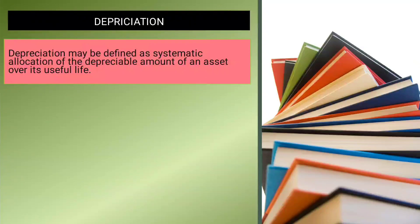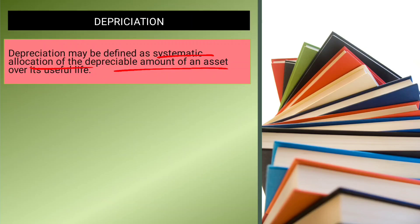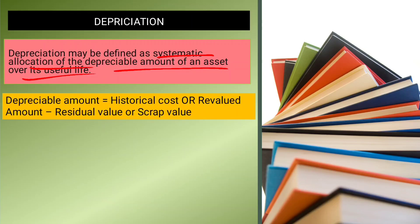Now we will discuss depreciation. AS10 Property, Plant and Equipment is a revised version that incorporates depreciation, previously covered under AS6. Depreciation is defined as the systematic allocation of the depreciable amount of an asset over its useful life.